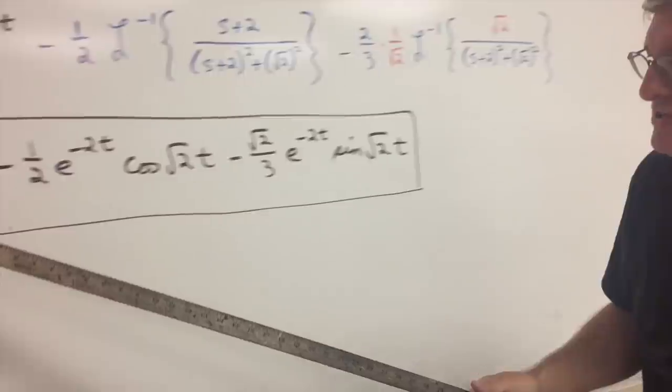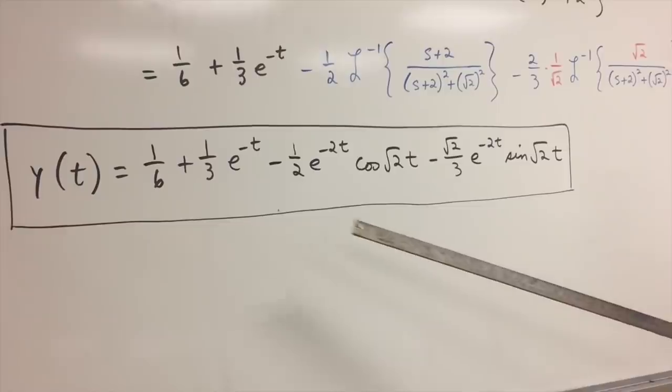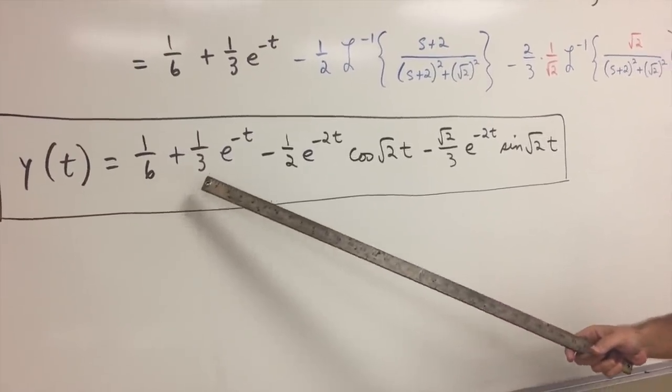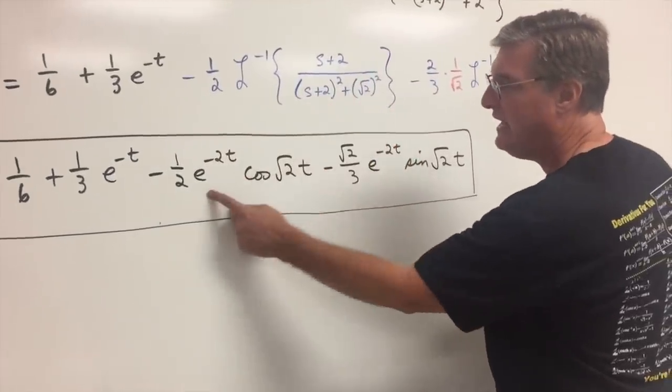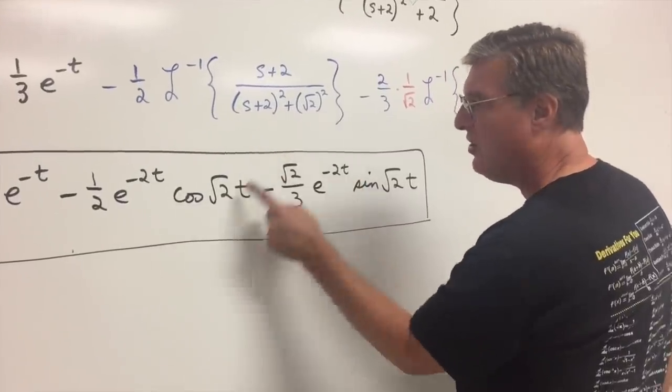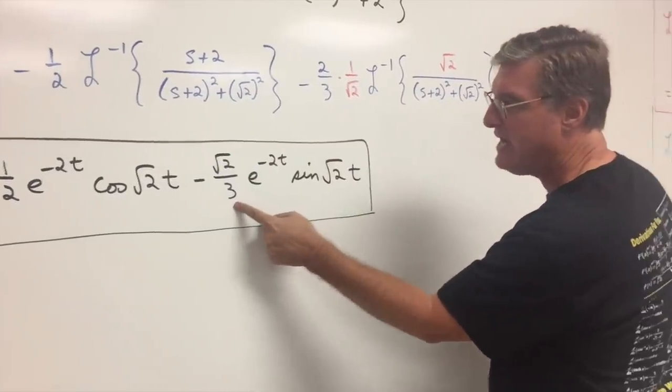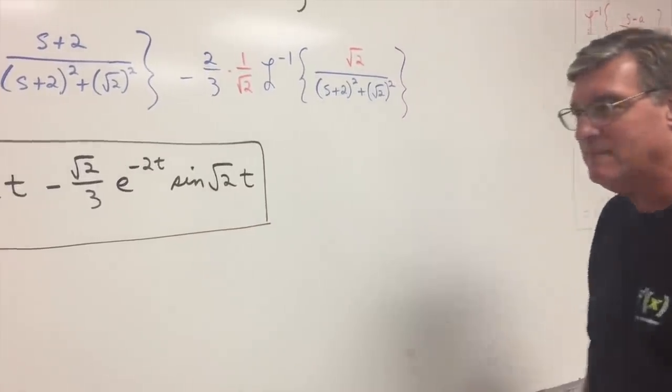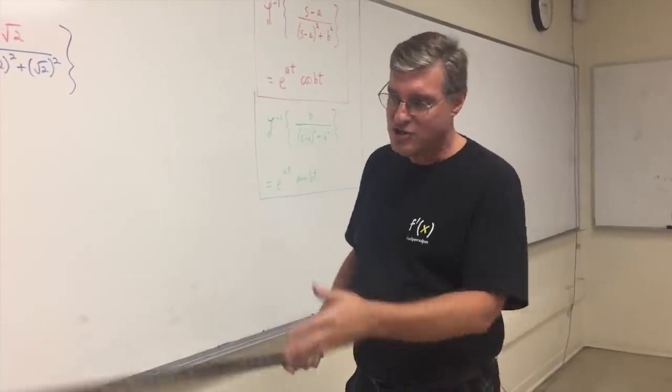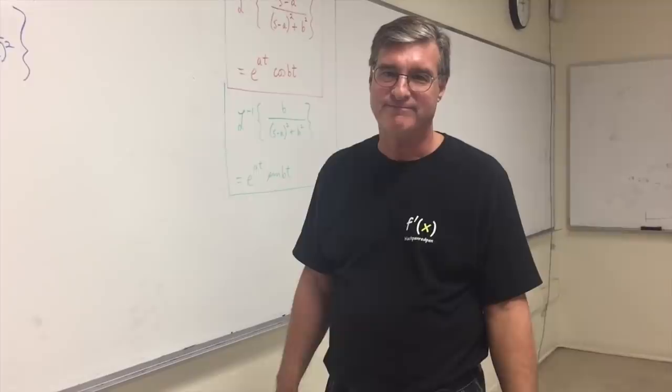We'll get to the final answer here. So here's the function that satisfies this differential equation with the initial conditions. It's y(t) = 1/6 + (1/3)e^(-t) - (1/2)e^(-2t)cos(√2 t). And then after you rationalize this, minus (√2/3)e^(-2t)sin(√2 t). Beautiful method. Some partial fractions involved in there. But notice when you fix up the numerator here, you don't need to worry about the initial conditions. They're baked right in the solution.